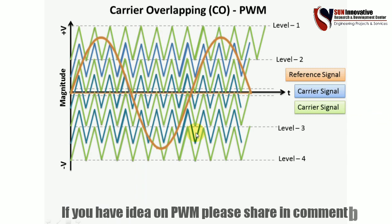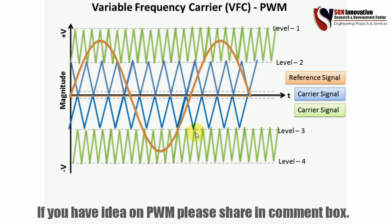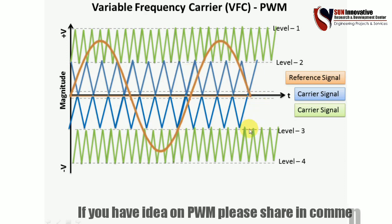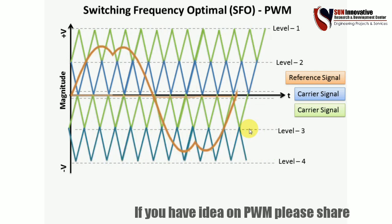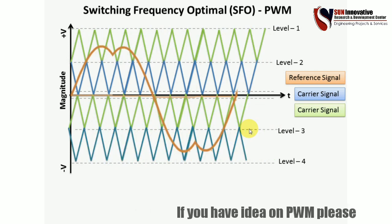This is the variable frequency carrier (VFC) PWM technique. Two carrier signals are used, each with a different frequency — the upper (green) signal has a higher frequency and the lower (blue) signal has a lower frequency, as visible in the graph. By comparing the sinusoidal reference signal with these carriers, gate pulses for PWM are generated.